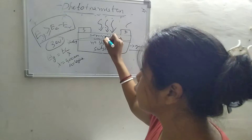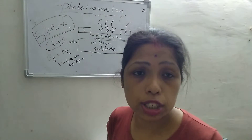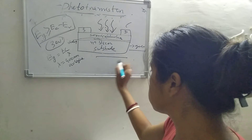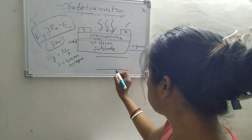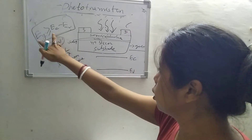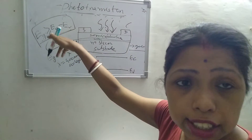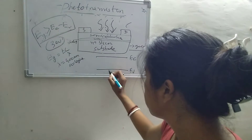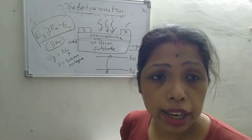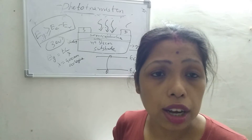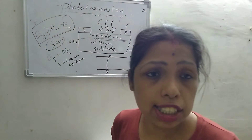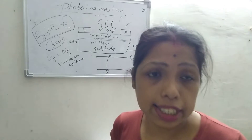If UV light is incident on the 3 electron volt semiconductor, then you will get electron-hole pairs. How are electron-hole pairs produced? If the EG is greater than or equal to EC minus EV, electrons will transfer from the valence band to the conduction band. Then electron-hole pairs will be produced. This is known as the band-to-band transition.